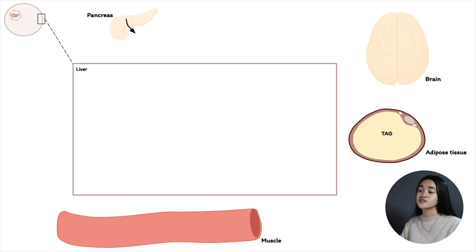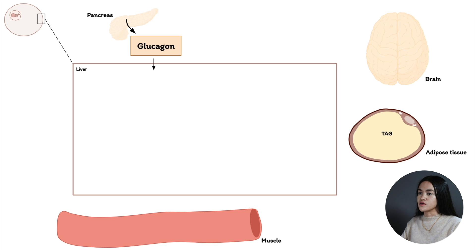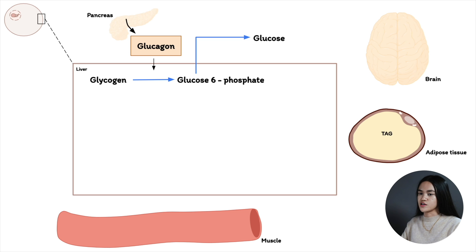During a fasting state, the liver is the primary source of glucose for the brain. Liver glycogen is broken down to glucose-1-phosphate, converted to glucose-6-phosphate, and then to free glucose. Free glucose is exported to the bloodstream where it travels to the brain for oxidation.